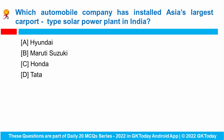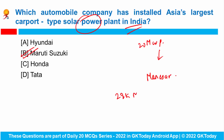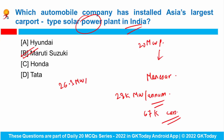Next question: Which automobile company has installed Asia's largest carport-type solar power plant in India? Maruti Suzuki India has set up Asia's largest carport-type 20 megawatt peak solar power plant at its Manesar-based manufacturing facility. This initiative will contribute approximately 28,000 megawatt hours per annum, equivalent to the energy required for production of over 67,000 cars annually. The company's combined solar power generation capacity is now 26.3 megawatt peak. A solar carport is an overhead shade parking area shelter for solar panels.